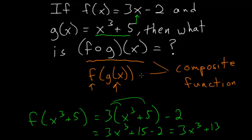So 3x cubed plus 13 is equal to f of g of x.